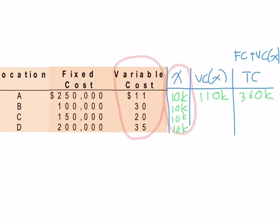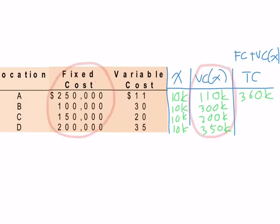The variable cost time x for location B is 300,000. For location C, 200,000. For location D is 350,000. The total cost is 400,000. 350,000. And for location D is 550,000.